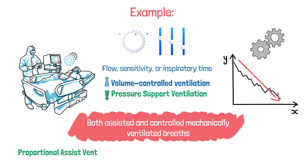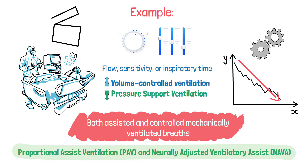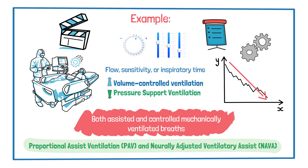Proportional assist ventilation and neurally adjusted ventilatory assist are two ventilator modes that are effective in avoiding dyssynchrony, because they allow the patient to select the ventilatory pattern that is delivered. This video provides just a brief overview of the topic, which will be broken down in much more detail in a separate video.